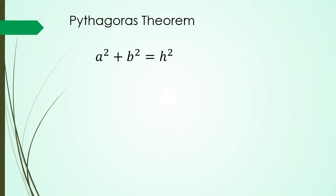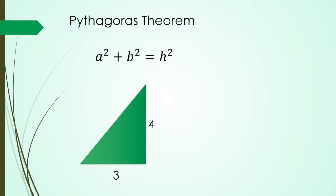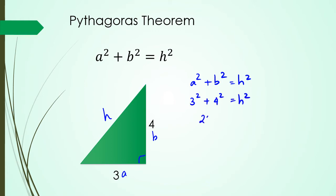Now if you've forgotten what that is, that was a squared plus b squared equals h squared. So I'm going to show you a quick example of how to do this. I've got my base here, I'm going to put this as a, that is b, and then this here is my hypotenuse because this is a right angle triangle. So I have a squared plus b squared equals h squared. 3 squared plus 4 squared equals h squared. Doing this you get h squared equals 25, therefore h is equal to 5.